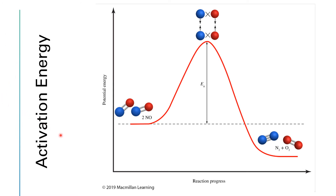When we start talking about the energy of these reactions, we typically draw this type of energy level diagram. The vertical axis is the energy of the molecules. The horizontal axis is something called the reaction progress — I always think of this as being time, so early in the reaction we're on the left, and as time goes by we end up on the right. According to this diagram, we're starting with two NO molecules and ending with a nitrogen molecule and an oxygen molecule, passing through a transition state along the way.